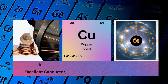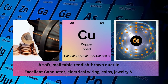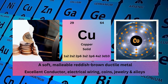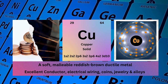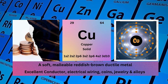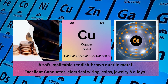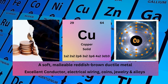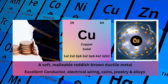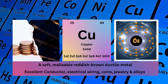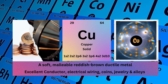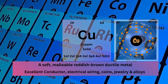Copper. Atomic No. 29. Mass No. 64. Symbol Cu. State Solid. Electronic Configuration 1S2 2S2 2P6 3S2 3P6 4S2 3D10. Physical Properties: A Soft, Malleable, Reddish-Brown, Ductile Metal. Copper is used as an excellent conductor, for electrical wiring, coins, jewelry, and alloys.